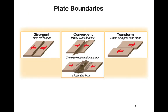Here's a picture showing you those three things: divergent — away from each other; convergent — come together; and transform. You can see in the convergent plate boundary picture, you can have a couple of different things happen when those two plates come together, depending on whether it's two continental plates crashing together or a continental and oceanic plate crashing together.